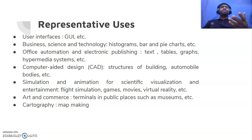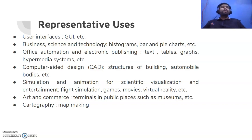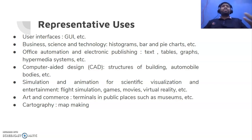Next we have office automation and electronic publishing, where we use tables, graphs and hypermedia systems. Office automation is like an app used to control your house — home automation — where you have an application with a few buttons, you click a button and the light switch or fan switch turns on. A lot of animations can be done for such kinds of things.